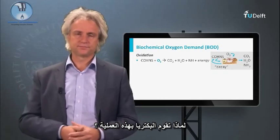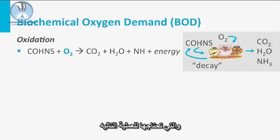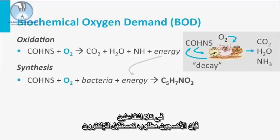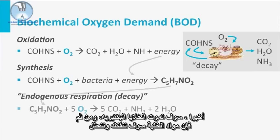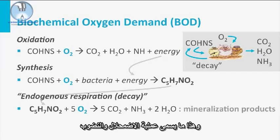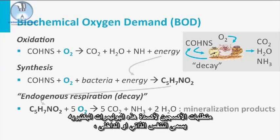Why do bacteria do that? Similar to why we consume foods, bacteria gain energy from this oxidation reaction, which they need for the subsequent process: synthesis of new cell material. In both reactions, oxygen is required as electron acceptor. Finally, bacterial cells will die off, after which the cell material will be disintegrated into organic compounds. This process is called decay. The released biopolymers are subsequently mineralized using again oxygen as electron acceptor. The oxygen requirement to oxidize these bacterial polymers is called endogenous respiration.